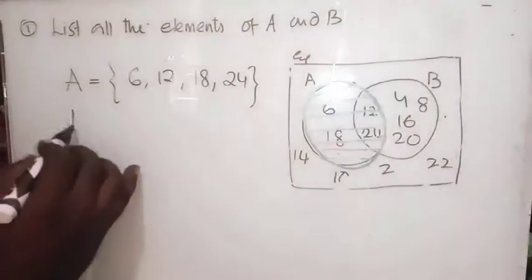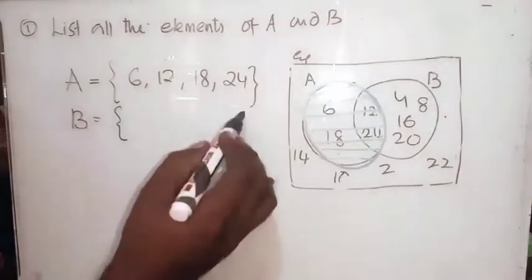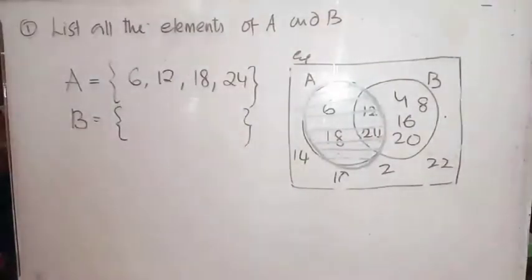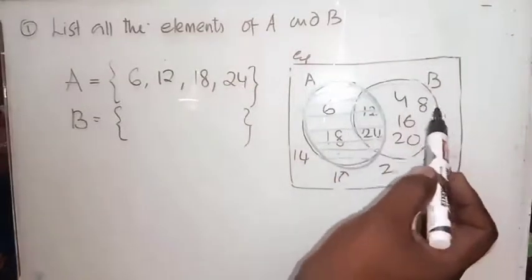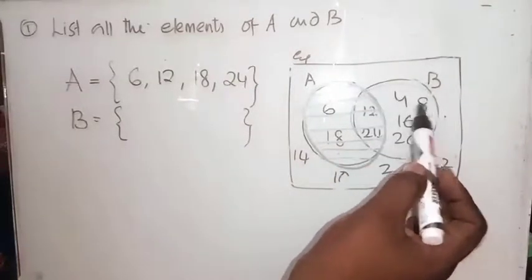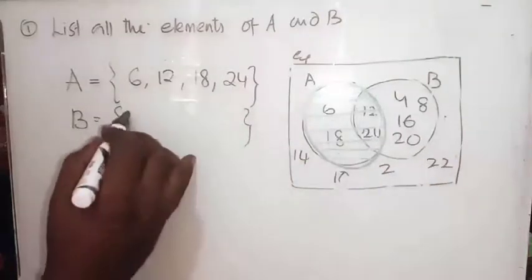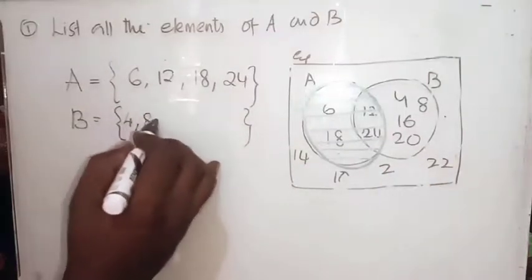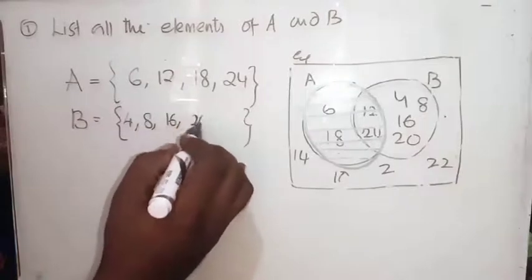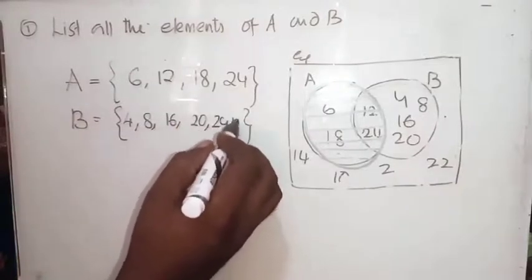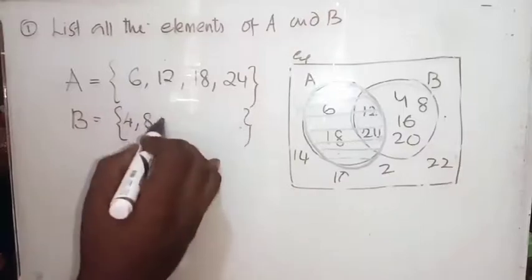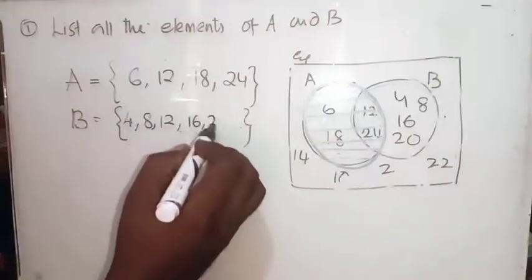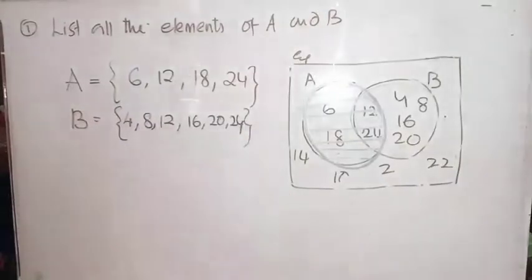Now what is set B? Set B contains elements 4, 8, 12, 16, 20, and 24. Writing them in order: B = {4, 8, 12, 16, 20, 24}.